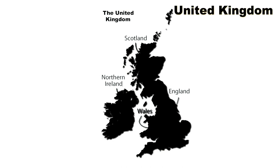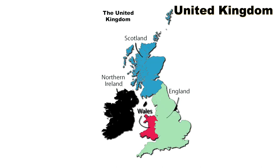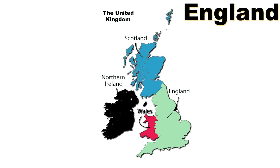First, let's start with the United Kingdom. The United Kingdom, also known as the UK, is a sovereign state made up of four countries: England, Scotland, Wales, and Northern Ireland. England is one of the four countries that make up the UK, and it is located in the southern part of the island of Great Britain. England is bordered by Scotland and Wales.